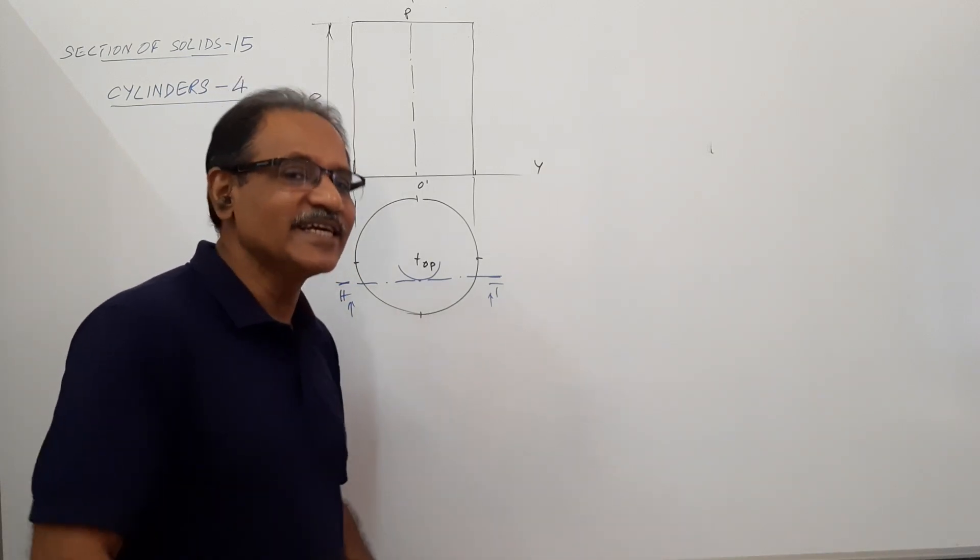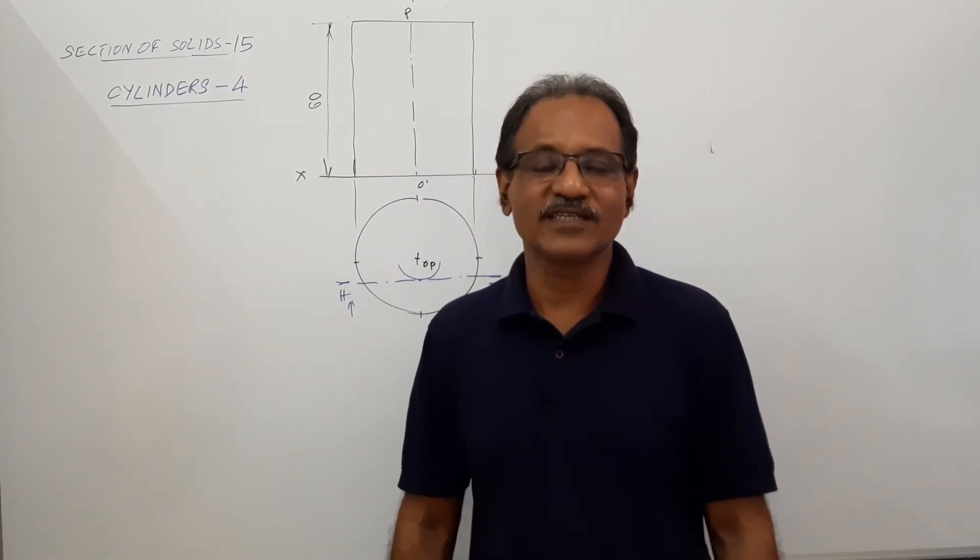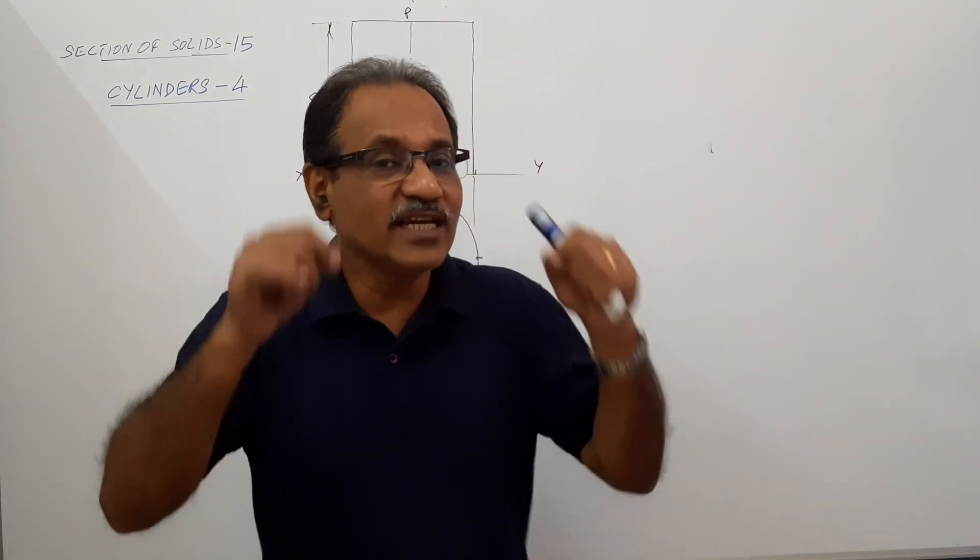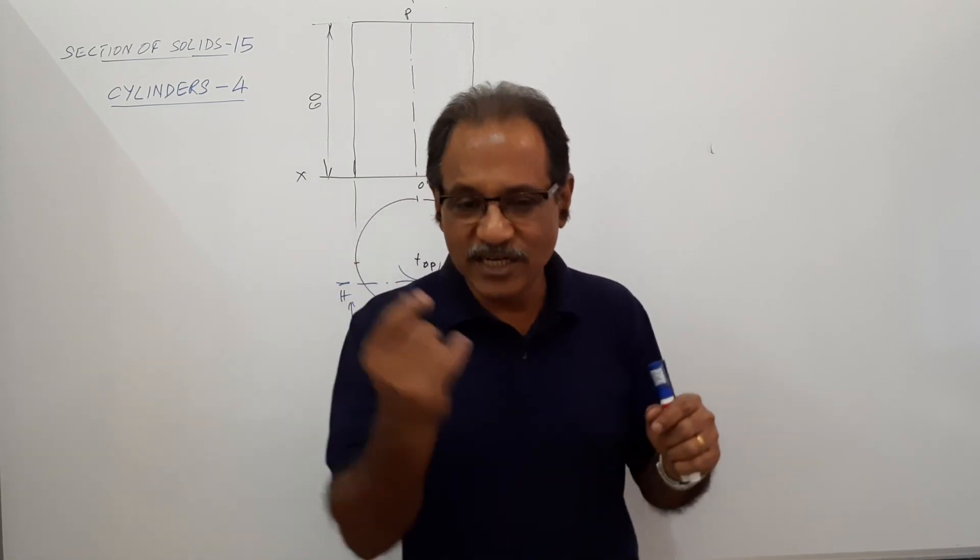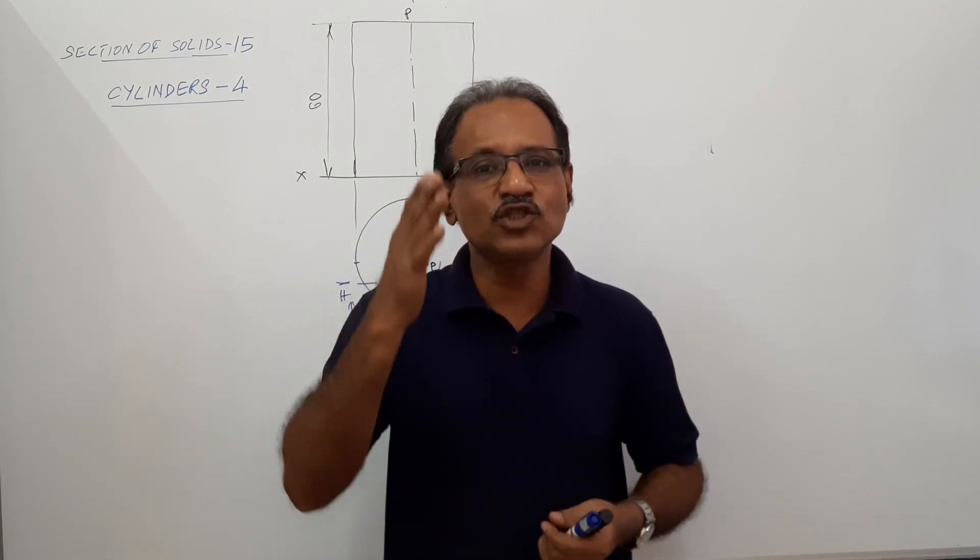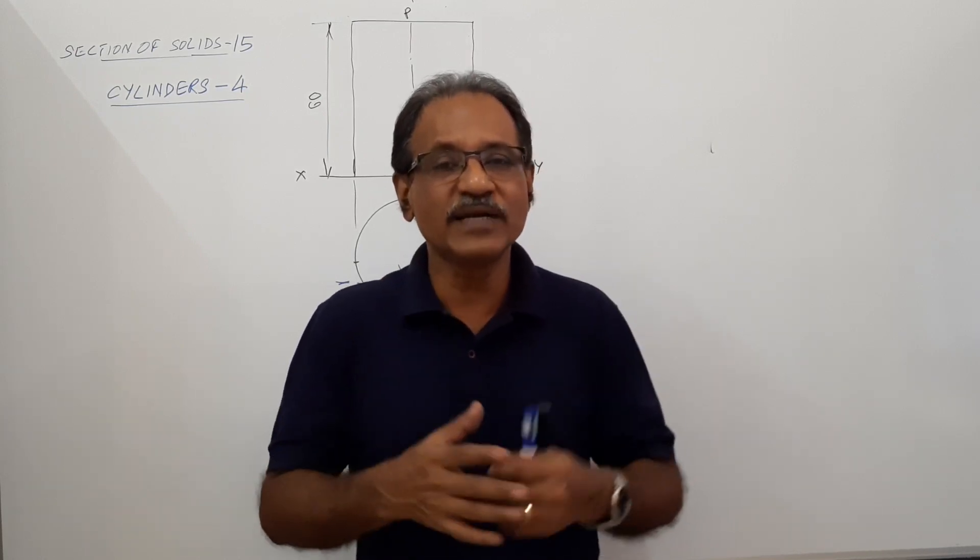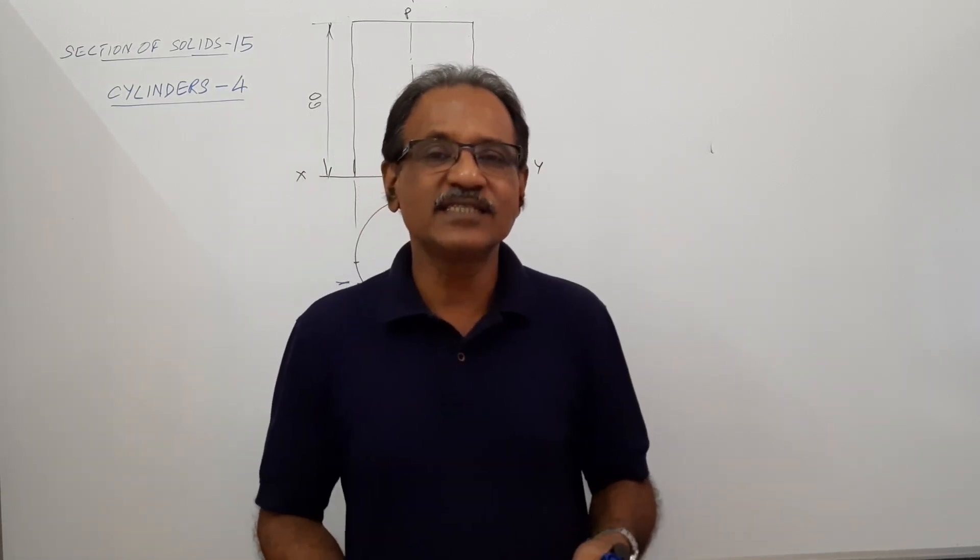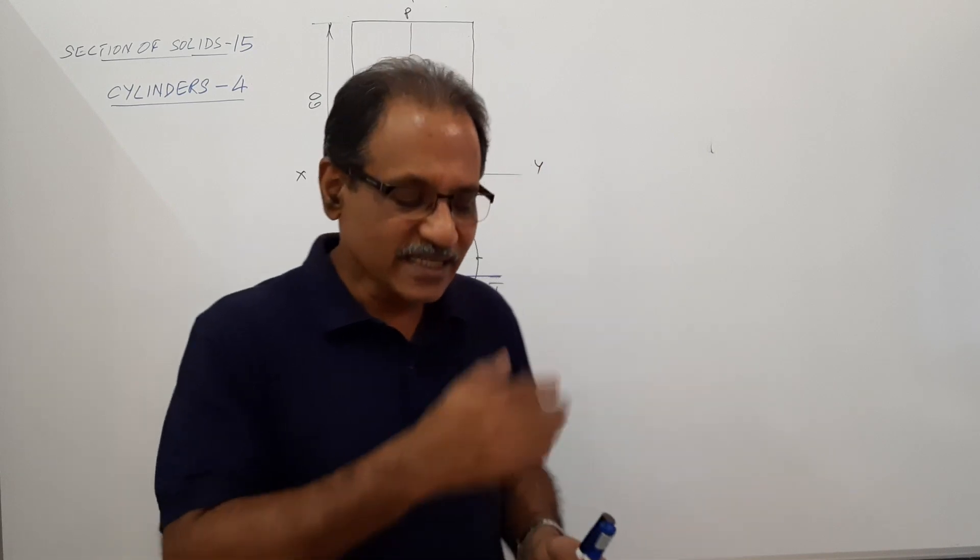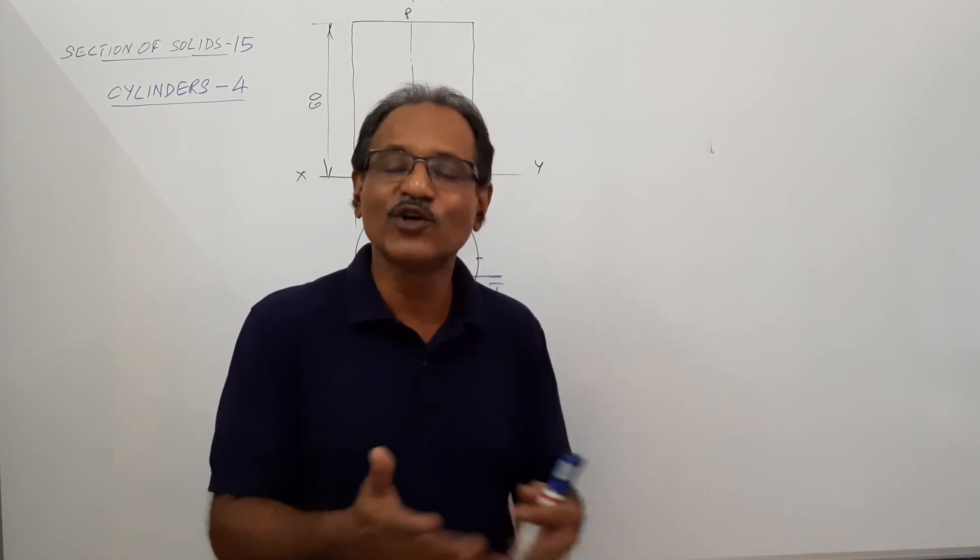I am not taking any generator for the cylinder. Why? This cutting plane is not going to cut any of the generators. Why do we take generators? Since there is no visible edges for the cylinder, we take generators and mark the points where the cutting plane cuts these generators. Here, this cutting plane which is perpendicular to HP and parallel to VP does not cut any of the generators, and therefore I do not take any of the generators.